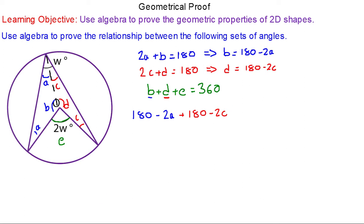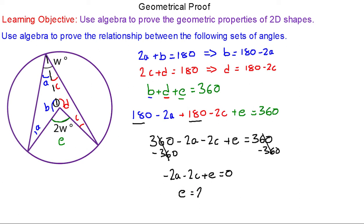We'll keep e as itself and they add to make 360. Now we can collect the 180s together to make 360 minus 2a minus 2c plus e will equal 360. Take away 360 from both sides. So negative 2a minus 2c plus e will equal 0. We can make e the subject. So e will equal 2a plus 2c.